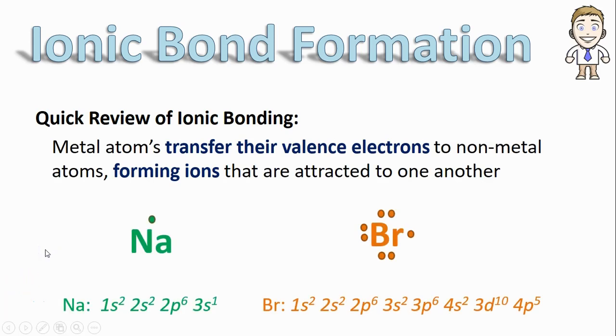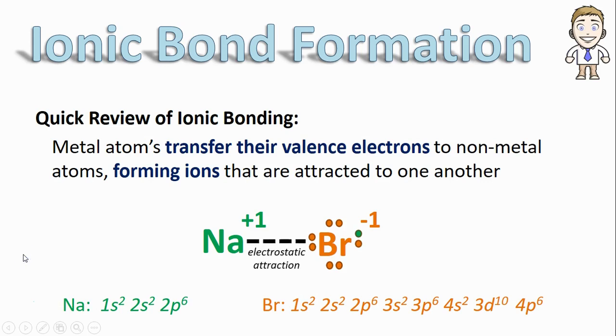Specifically, we looked at the example of sodium and bromine. Sodium, the metal, will transfer or lose its valence electron to bromine, the non-metal. This changes the electron configuration so that each is stable. More importantly, they both now get a charge, opposite charges, so they're attracted to one another with an electrostatic attraction, what we officially call an ionic bond.